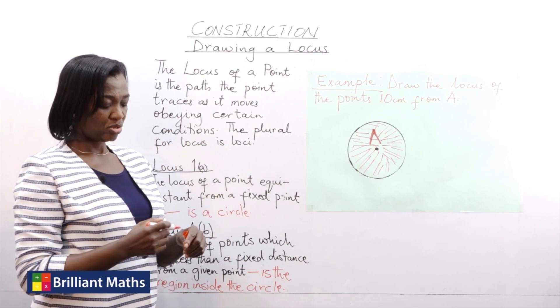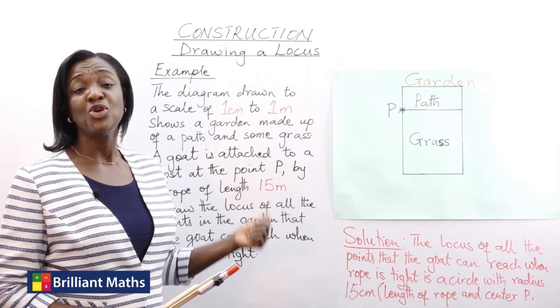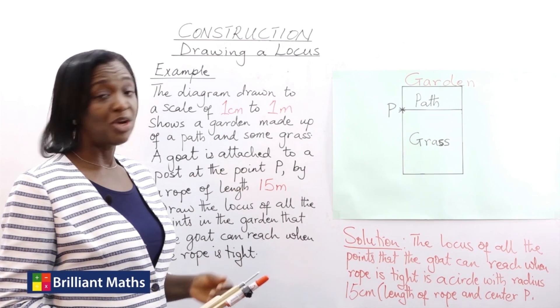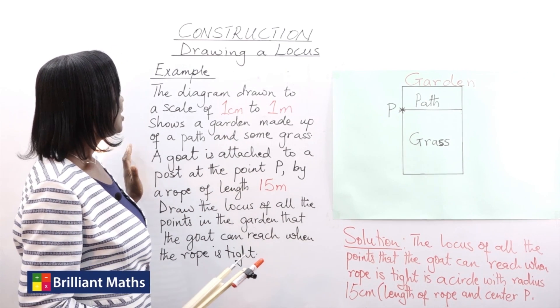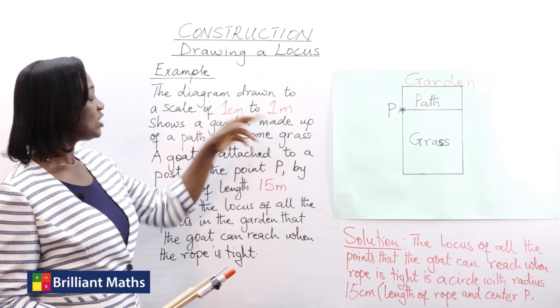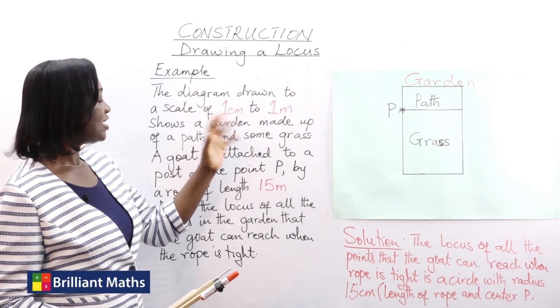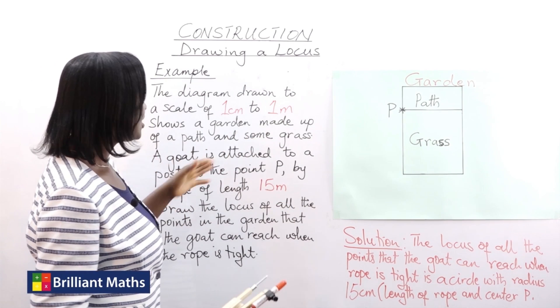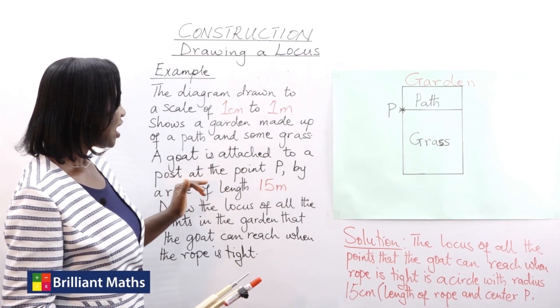Let's look at some more drawings. We want to look at a practical example of drawing a locus. The diagram drawn to a scale of 1 centimeter to 1 meter shows a garden made up of a path and some grass. A goat is attached to a post at the point P